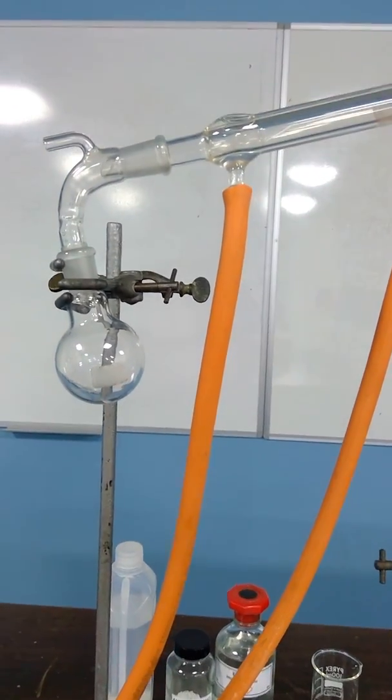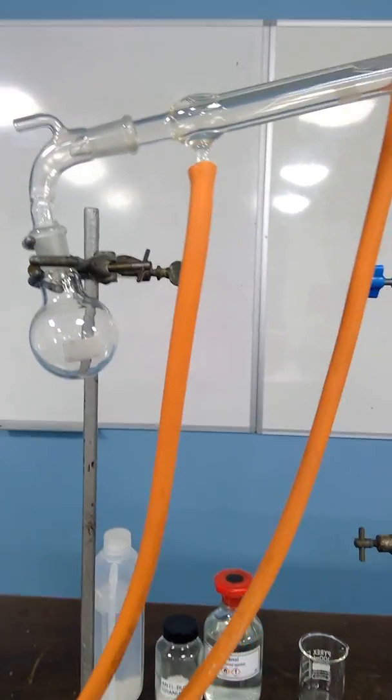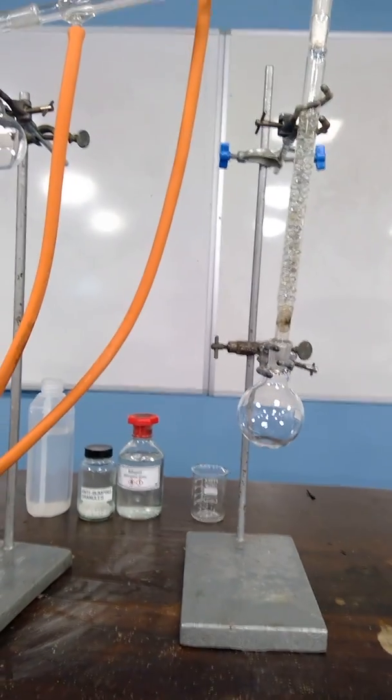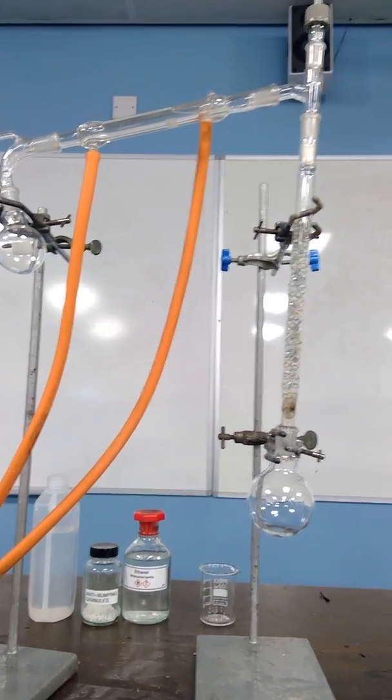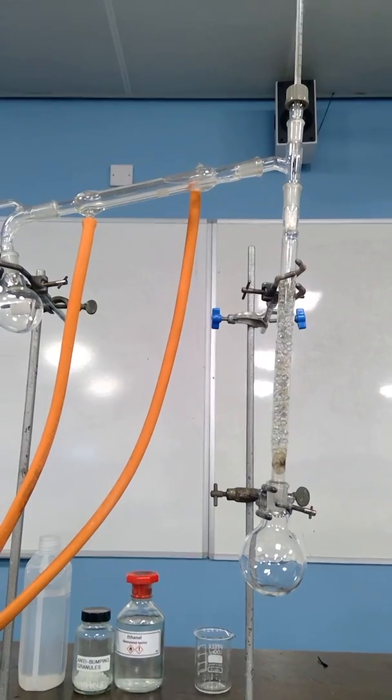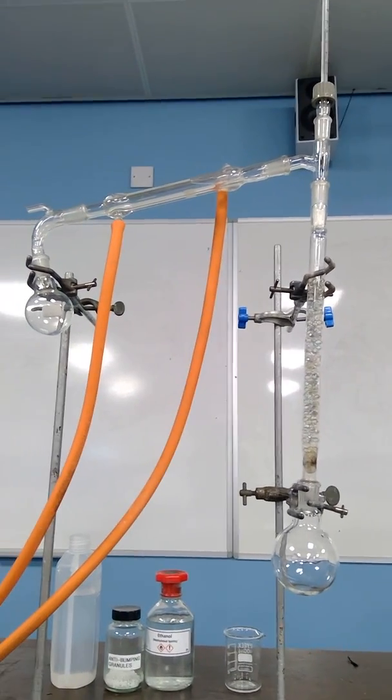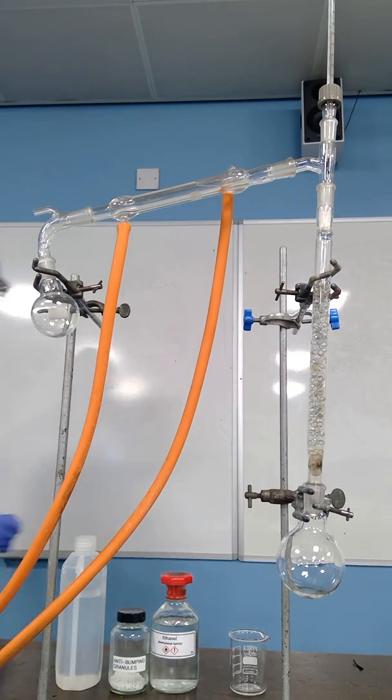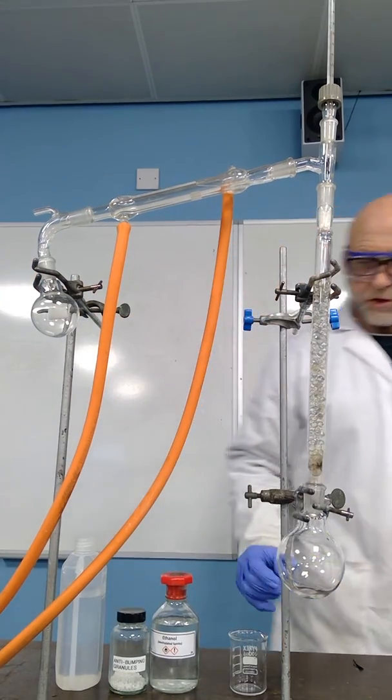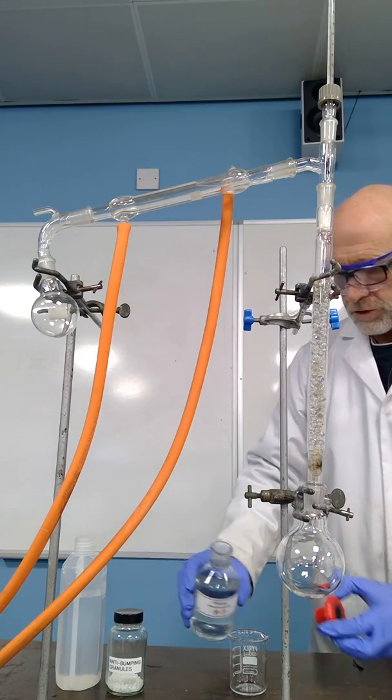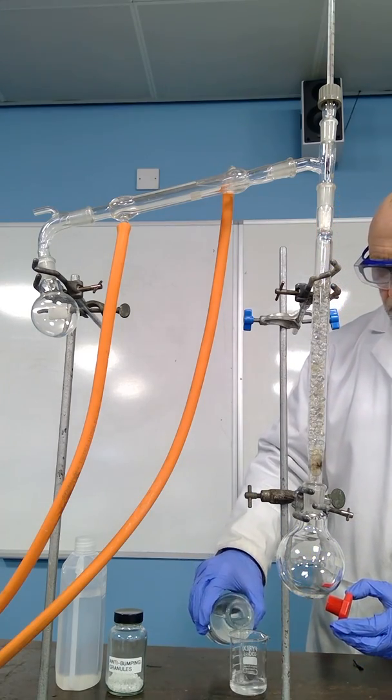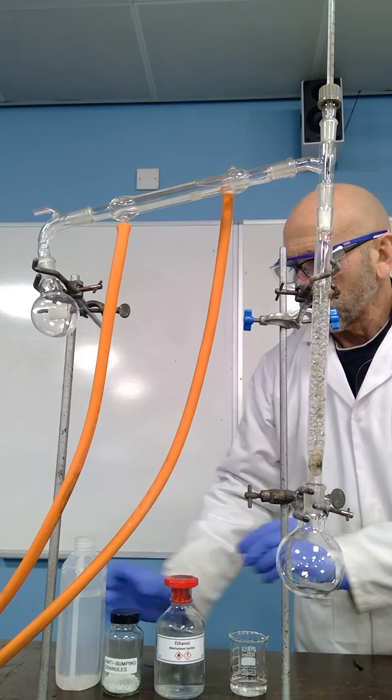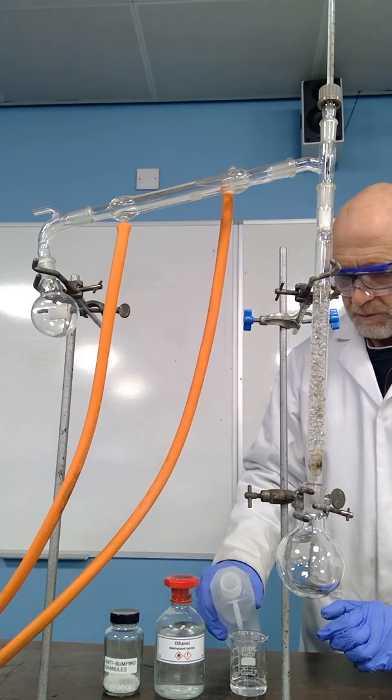We will collect the pure ethanol in another round bottom flask. The first job is to mix the ethanol and the water, so we'll put a little bit of ethanol and a small amount of water together as a mixture.